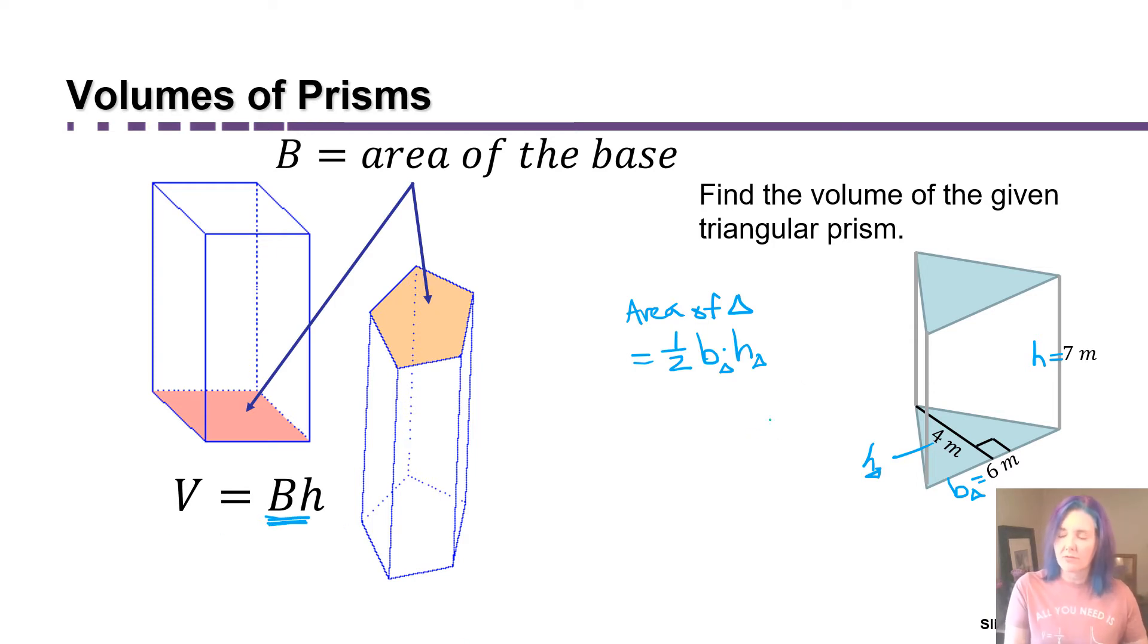All right, so anyway, the area of the triangle is one-half six times four. So that's half of 24, which is 12. And area is always measured in square units. So the area of that base is 12 square meters. If we want the volume of the prism, we're going to take that area of the base and multiply it times the height of the prism. So that's going to be 12 square meters times 7 meters. That's going to be 84 cubic meters.